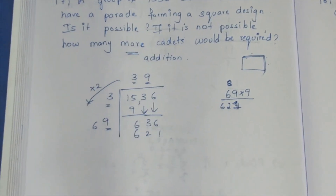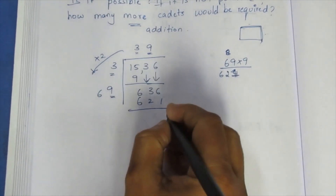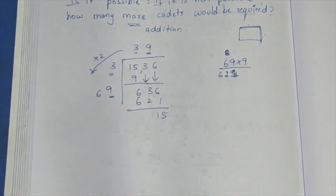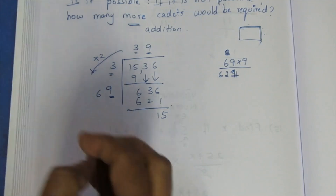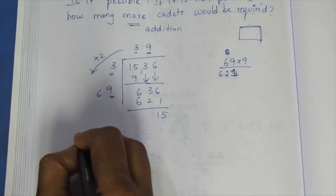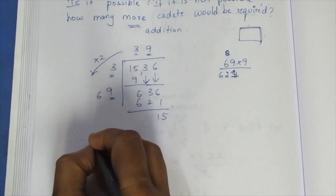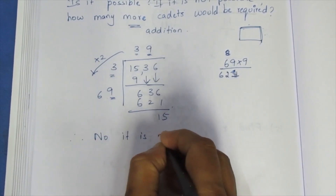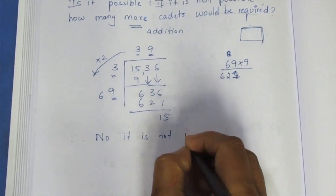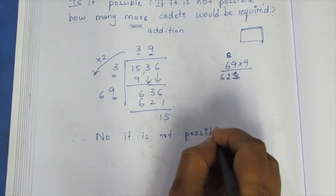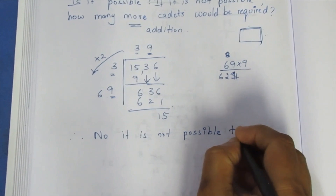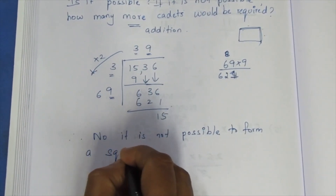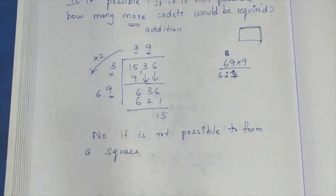This is a square root calculation. Therefore, is it possible to form a square? No, it is not possible to form a square, because 1536 is not a perfect square.